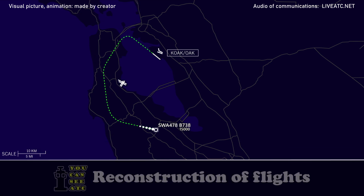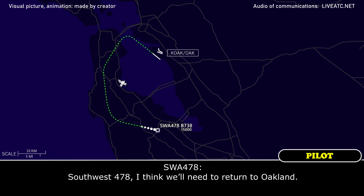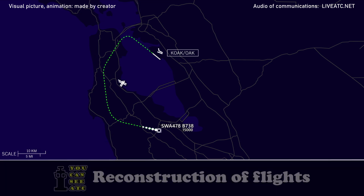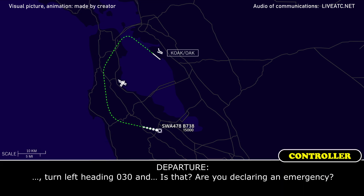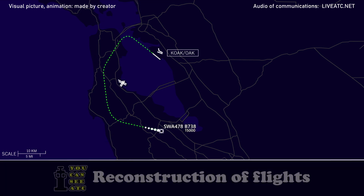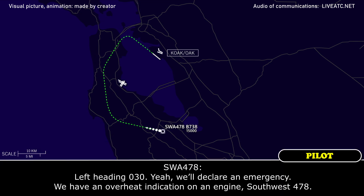ATC: Do you require any assistance? Southbound 478: Yeah, southbound 478, I think we'll need to return to Oakland. ATC: Return left heading 030, and are you declaring an emergency? Southbound 478: Left heading 030, yeah, we'll declare an emergency — we have an overheat indication on an engine, southbound 478.